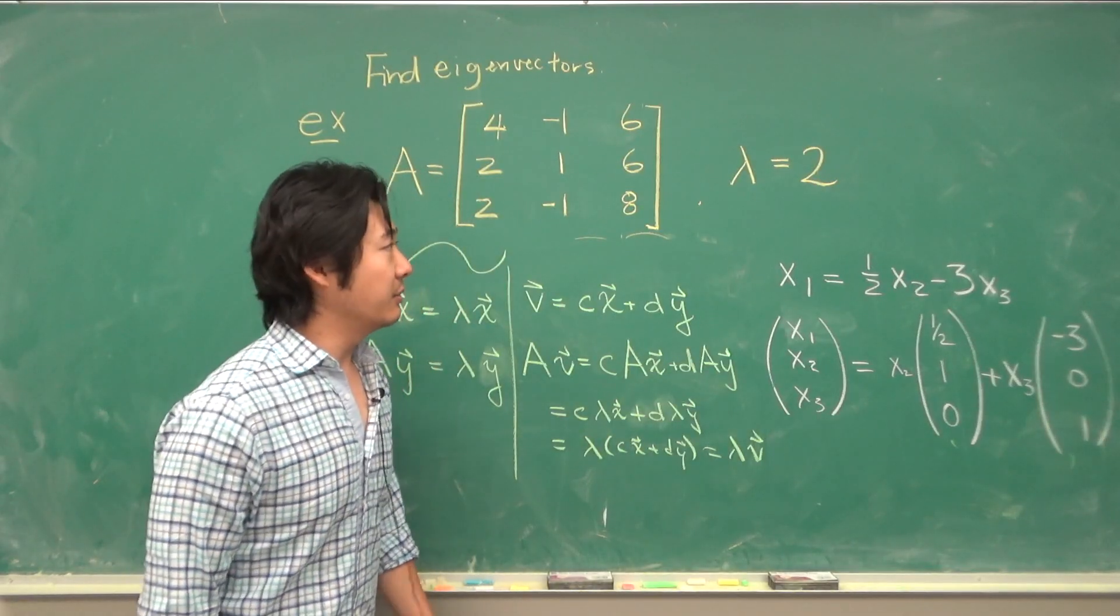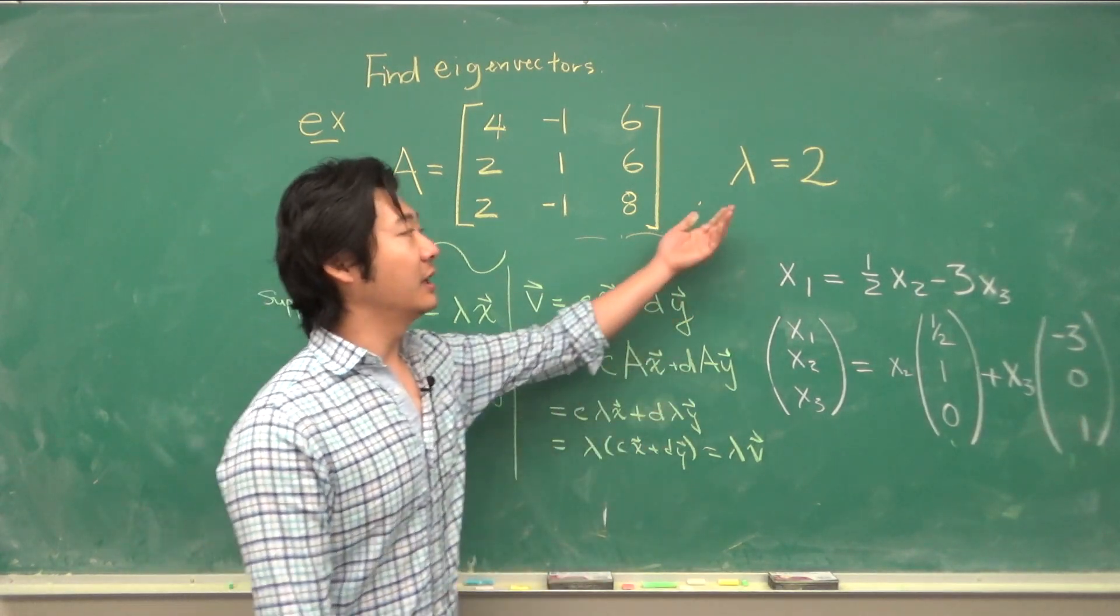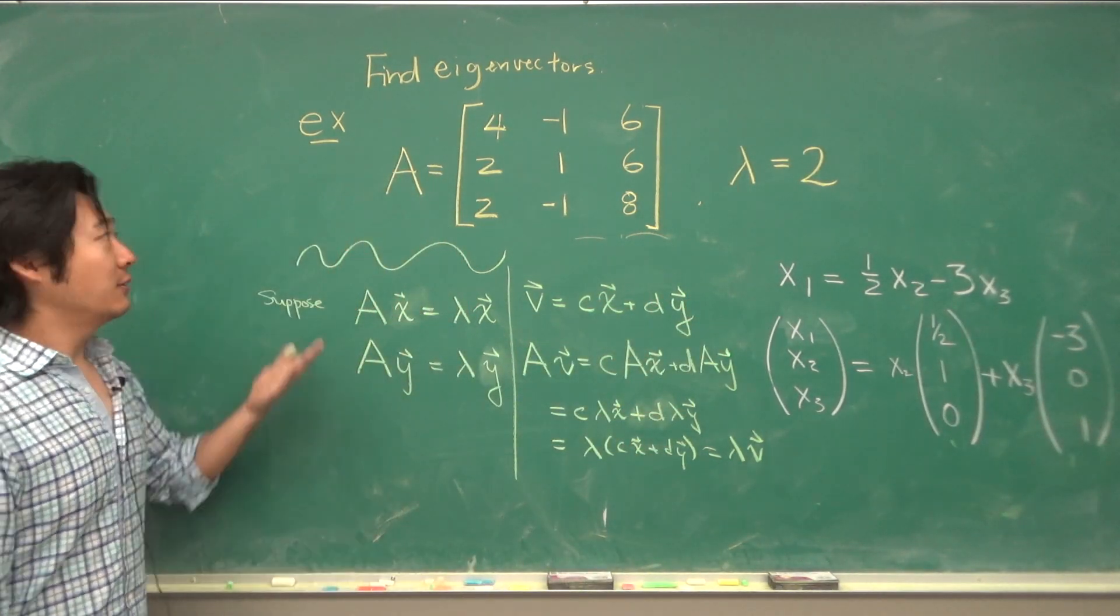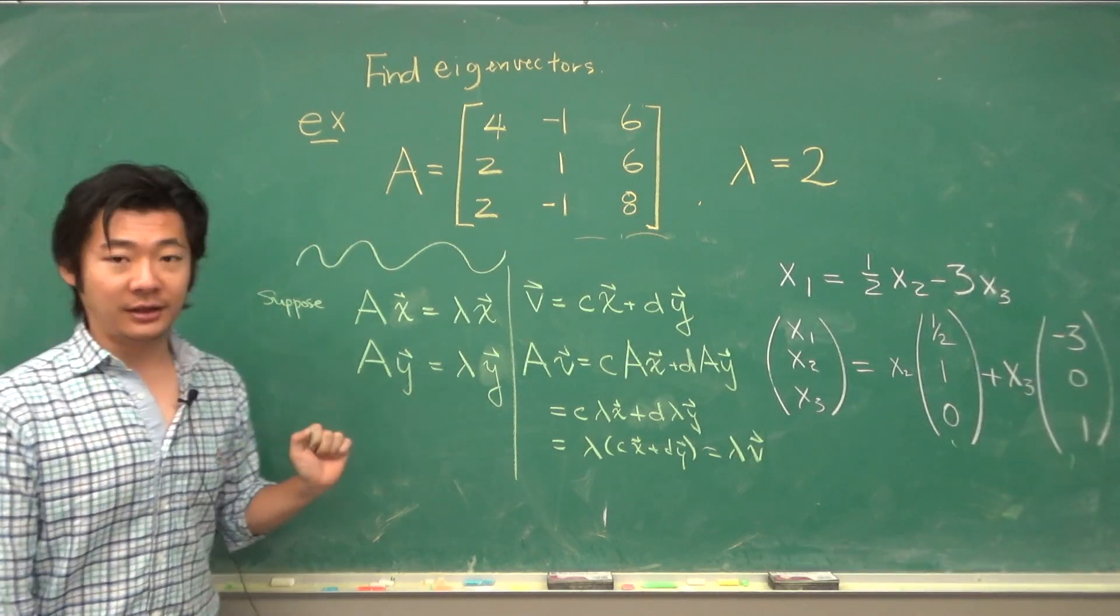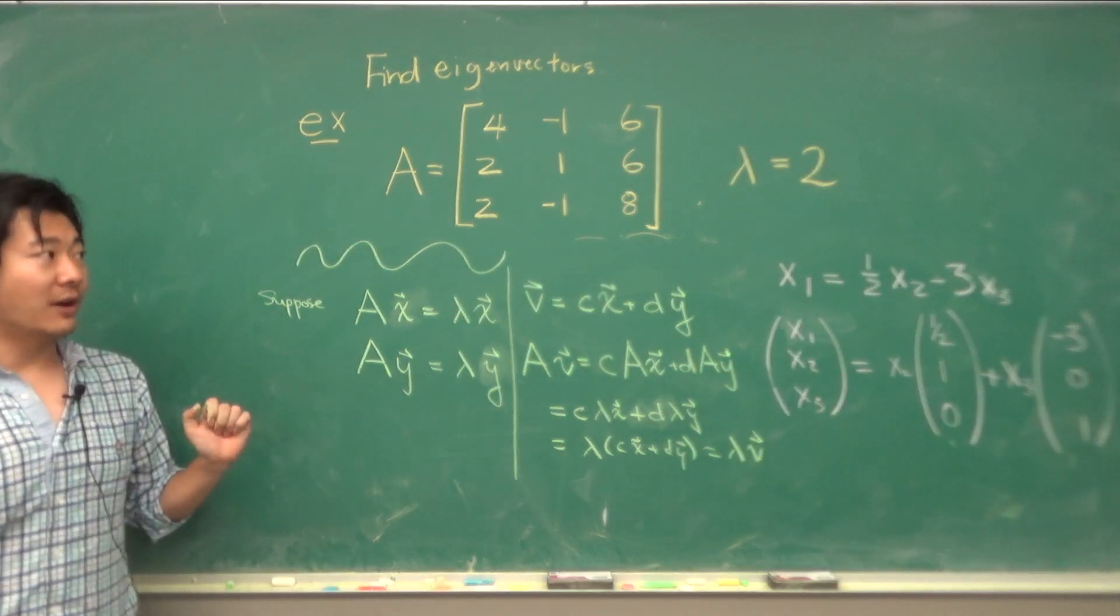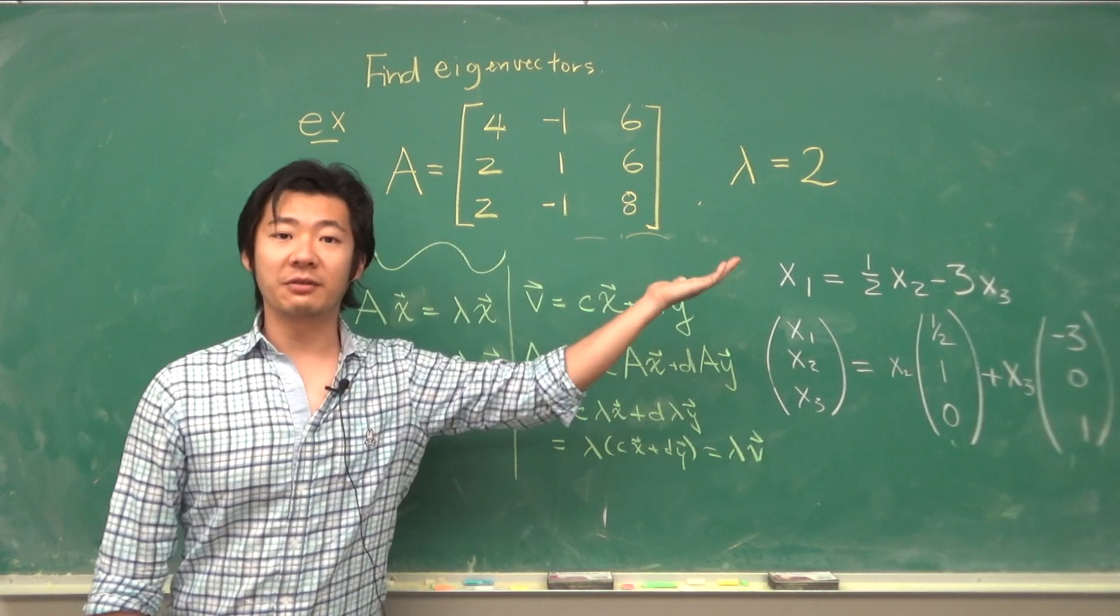But in this example, we needed to know that lambda equals 2 is an eigenvalue for A. So in the next video, we will talk about how to find eigenvalues of a matrix.